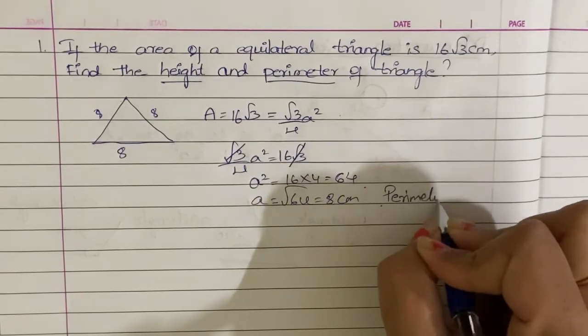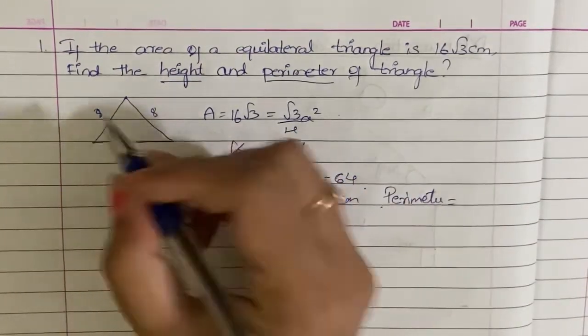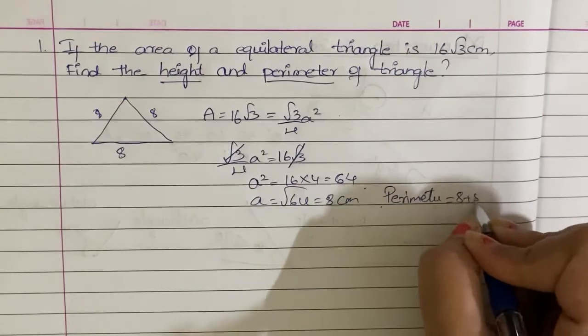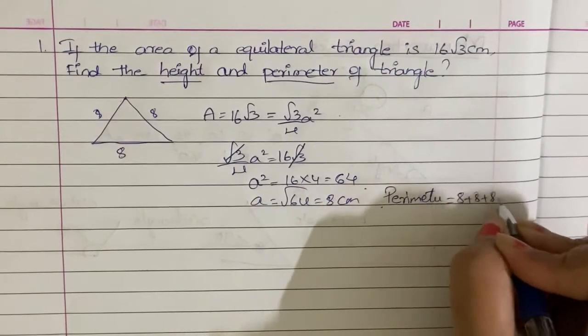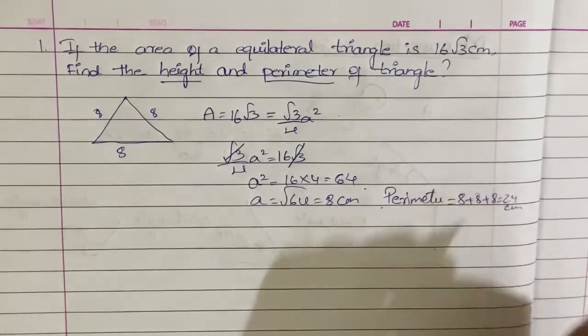The perimeter is the sum of the sides: 8 plus 8 plus 8, that is equal to 24 centimeters.